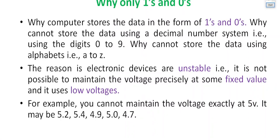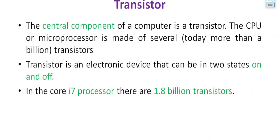Only a few voltage levels are possible, which is why we use the binary number system — with a high voltage representing 1 and a low voltage representing 0. So a computer works on the binary number system, not the decimal number system of digits 0 to 9 that we generally use. The transistor is the main component of a computer. It is an electronic device which has two states — on and off — where on represents 1 and off represents 0.